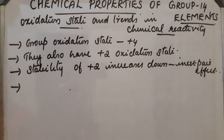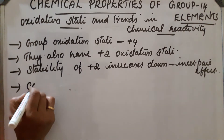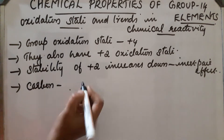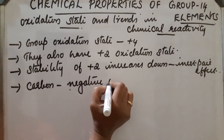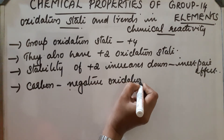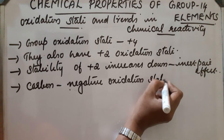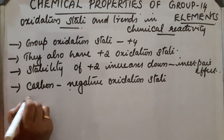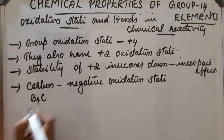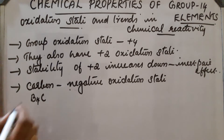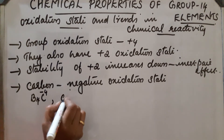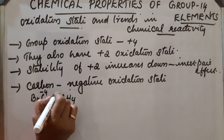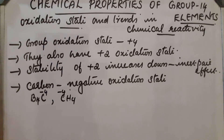In the case of carbon, carbon also exhibits a negative oxidation state. For example, in B4C (boron carbide), carbon has a minus 4 oxidation state. In CH4, carbon also has a minus 4 oxidation state.